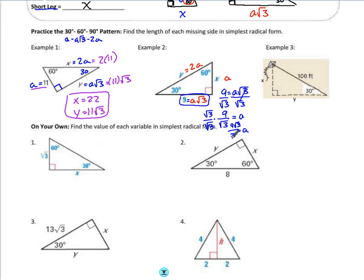So in this case, we can say that a is really equal to 3 root 3, which helps me a lot because that tells me what x is. And that tells me that if I double that value, I can find y. So 3 times 2 is 6, so 6 root 3 is my hypotenuse, y.